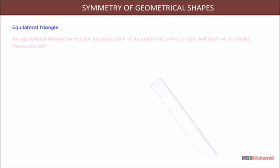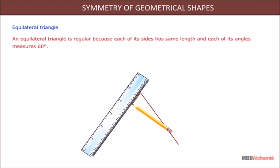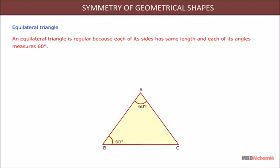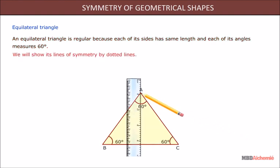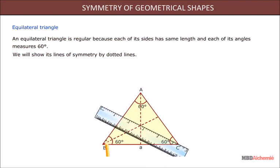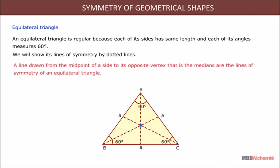An equilateral triangle is regular because each of its sides has the same length and each of its angles measures 60 degrees. We will show its lines of symmetry by dotted lines. A line drawn from the midpoint of a side to its opposite vertex — that is, the medians — are the lines of symmetry of an equilateral triangle. Hence, an equilateral triangle has three lines of symmetry.